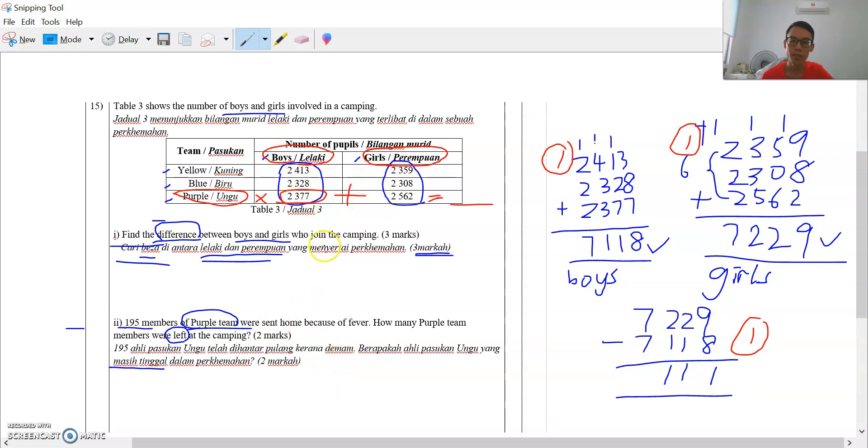So you must take the boys, 2,377, plus the girls, 2,562. So this total is the Purple Team.